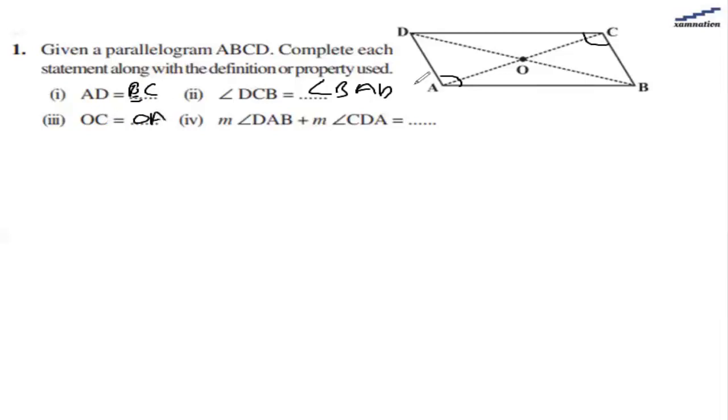OC will be equal to OA because diagonals bisect each other. What is angle DAB and CDA? Because this is a parallelogram, the sum of these angles will be 180 degrees.